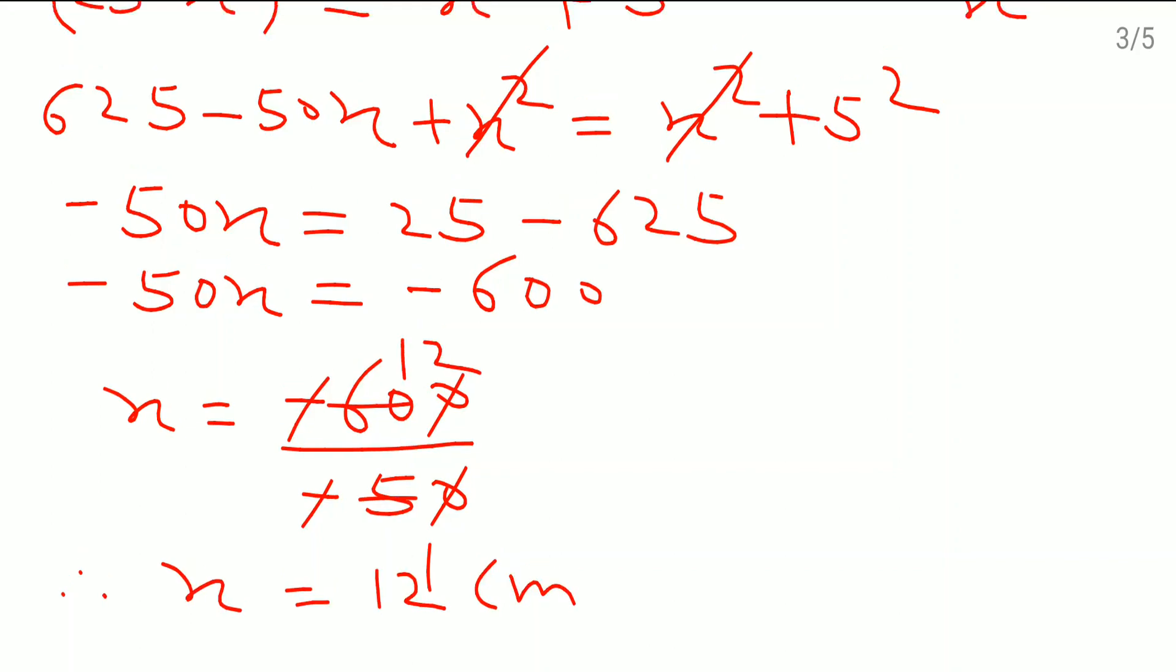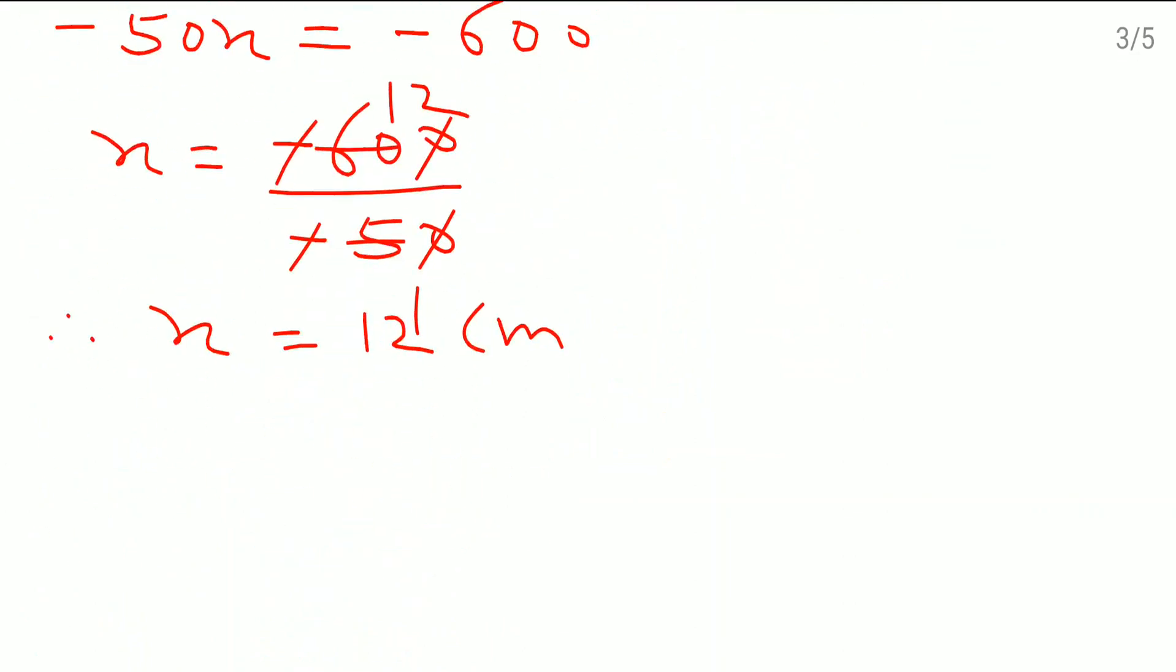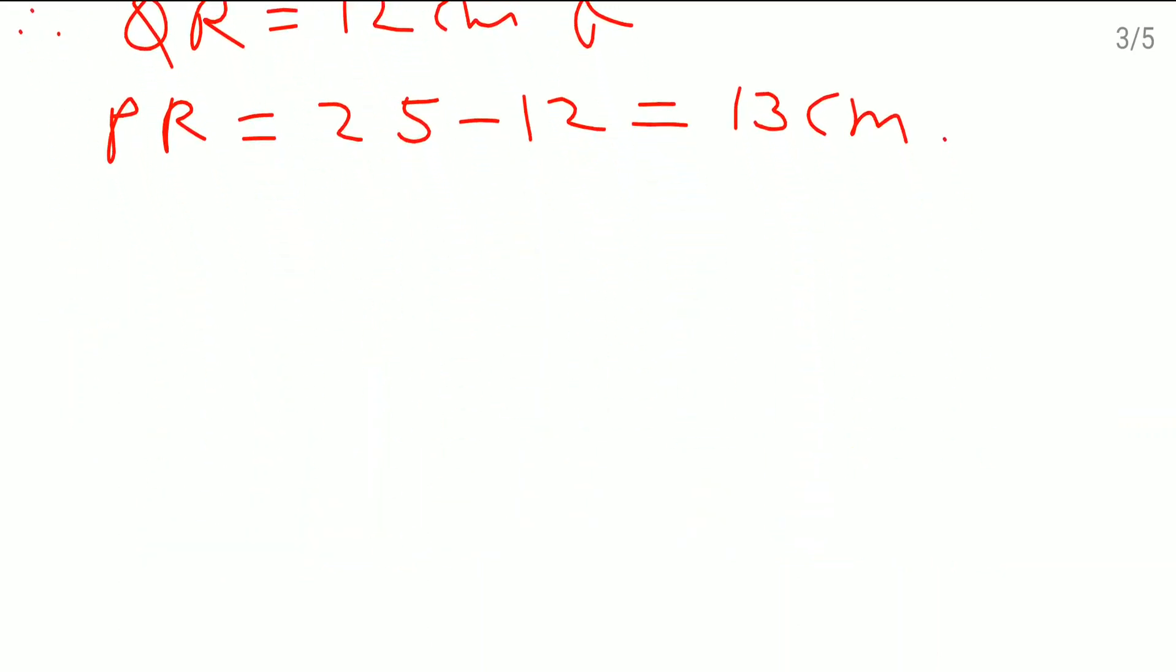That means we got the measurement of QR. Therefore QR which is equal to 12 cm and PR which is equal to 25 minus 12. We can write down 25 minus 12 which comes as 13 cm. So after doing this one here we need to write down the ratios.